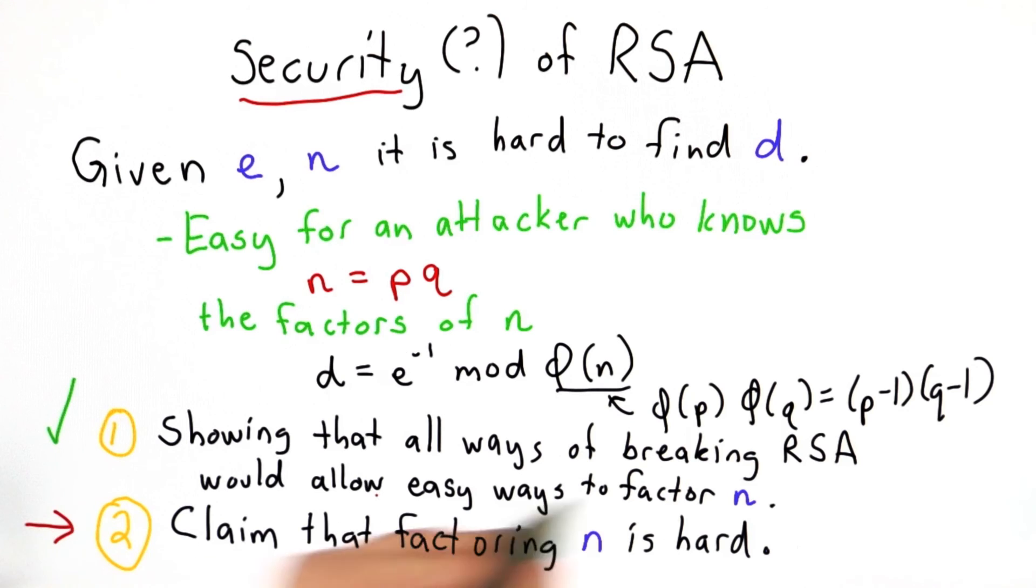So that means if factoring is hard, breaking RSA would be hard. So that's the second part of this claim, is that factoring is indeed hard.